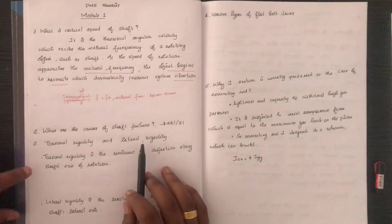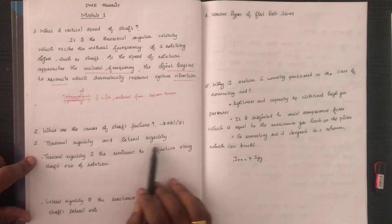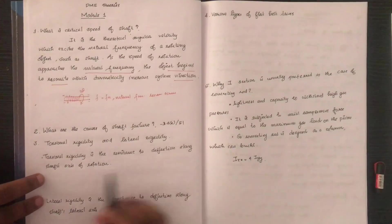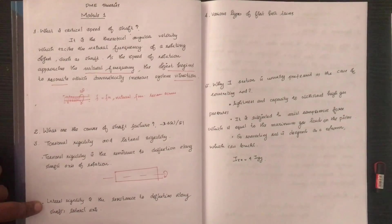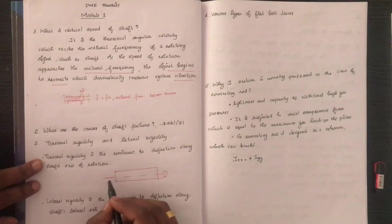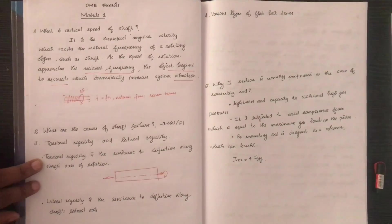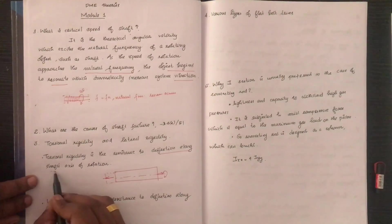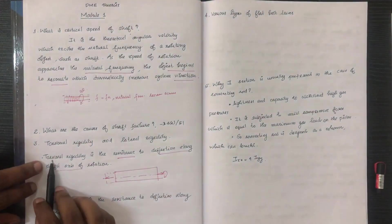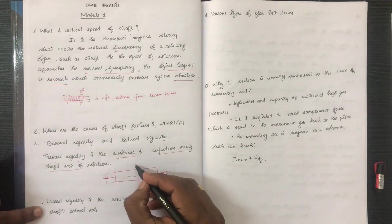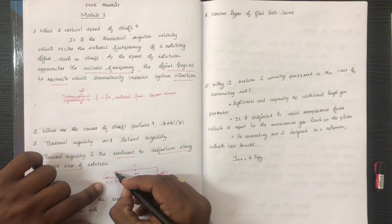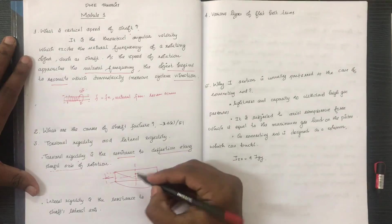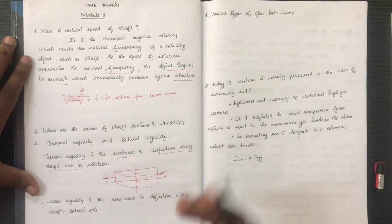Now we have torsional rigidity and lateral rigidity. Torsional rigidity is the resistance to deflection along the axis of the shaft. Lateral rigidity is the resistance to deflection perpendicular to the shaft axis, along the lateral surface.